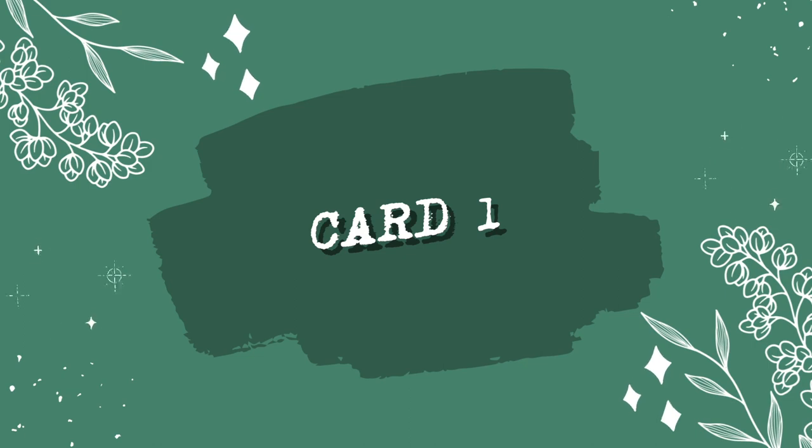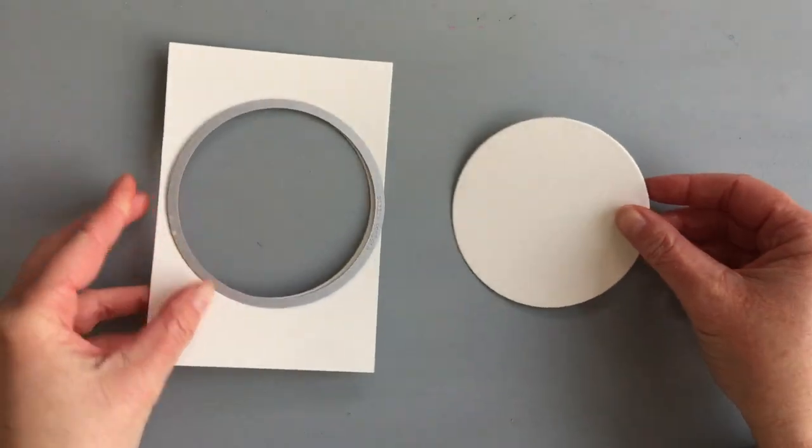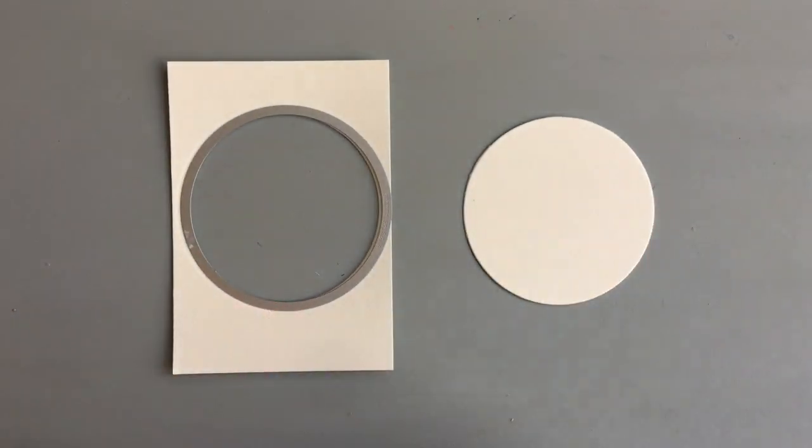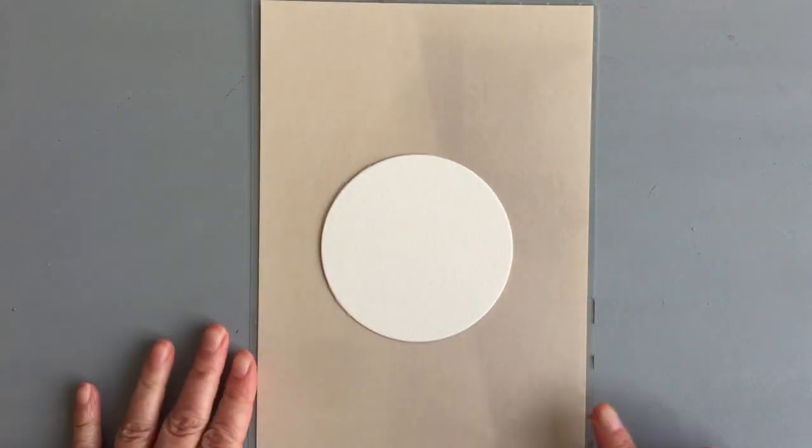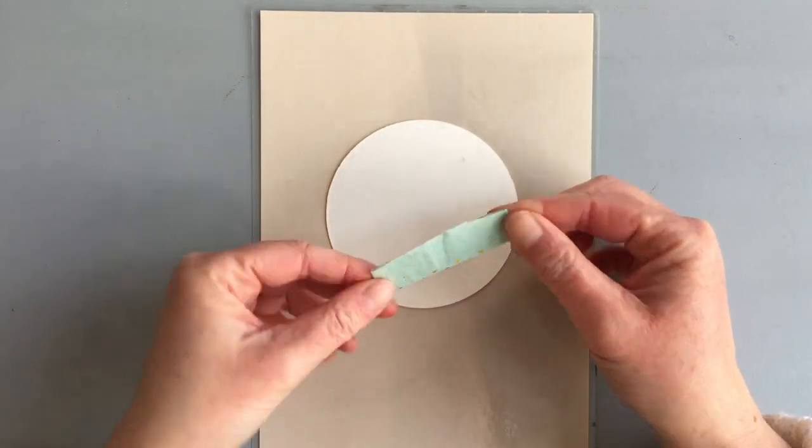So let's start with my first card. Here I die cut a circle—it's the biggest size that fits on an A6 card—and I placed it onto a board, which is just laminated cardstock. To prevent it from moving, I used washi tape and placed it on the back of the circle.